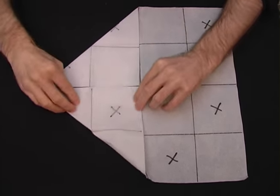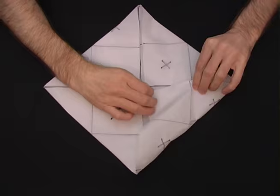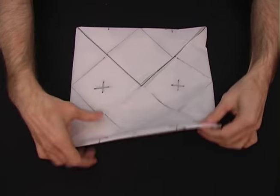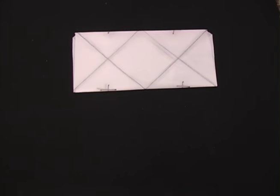To win the bet, fold the 4 corners to the centre like this. Rotate the paper around and fold the top half over the bottom.